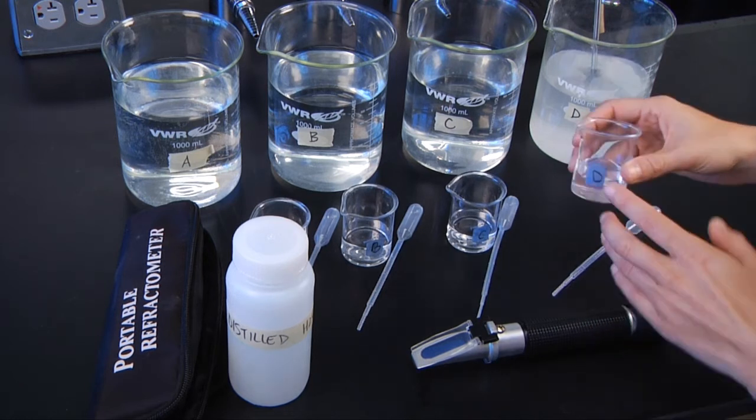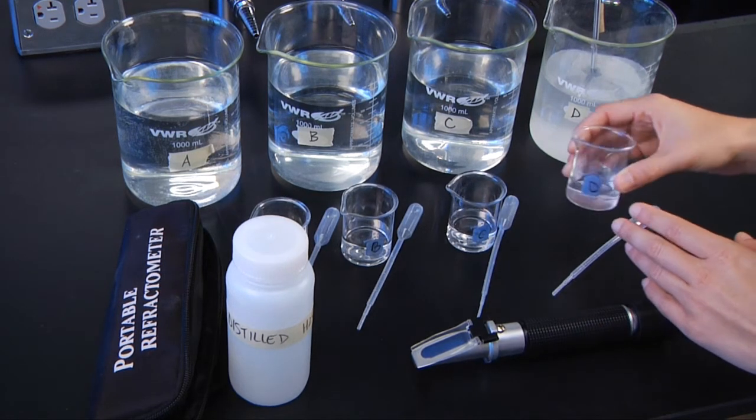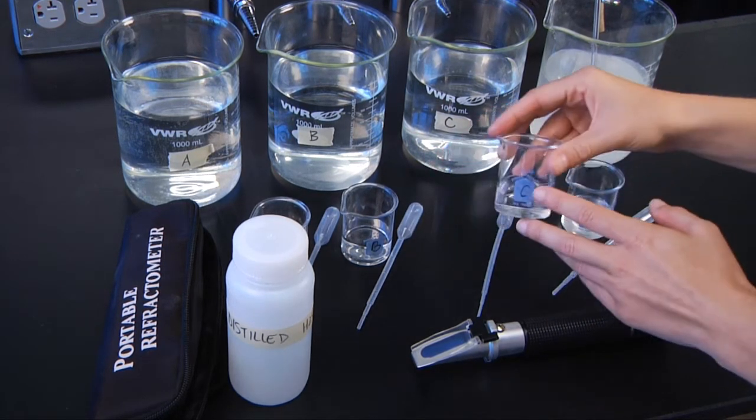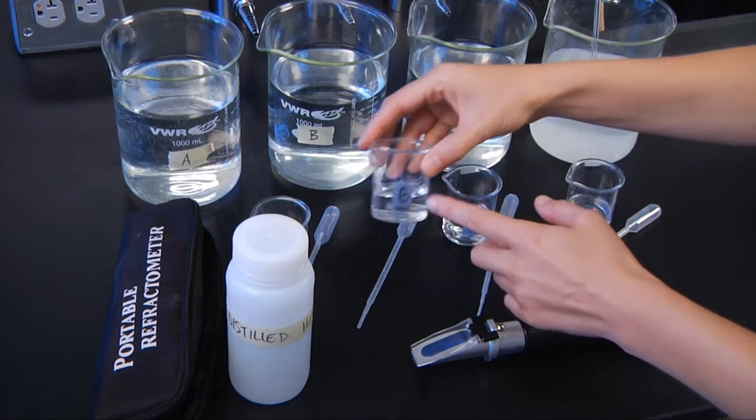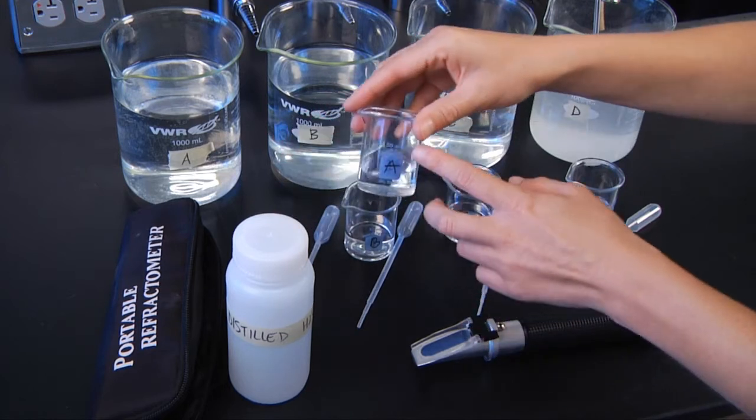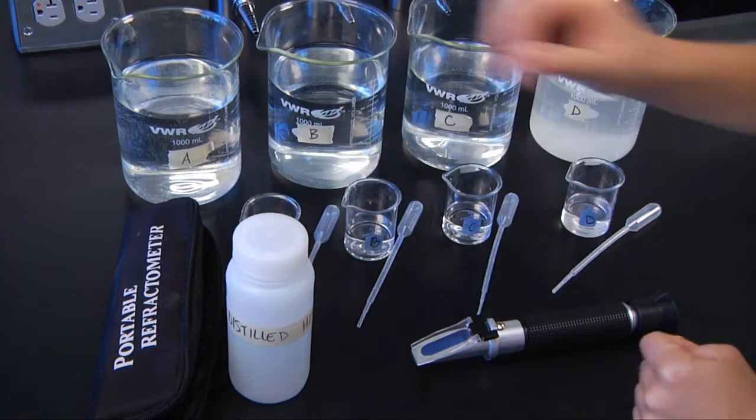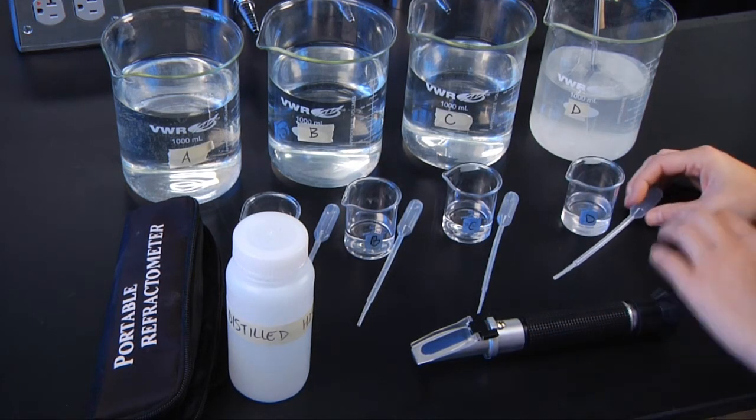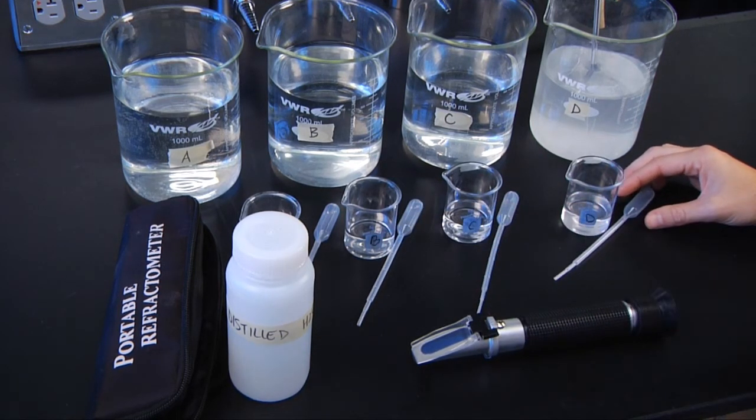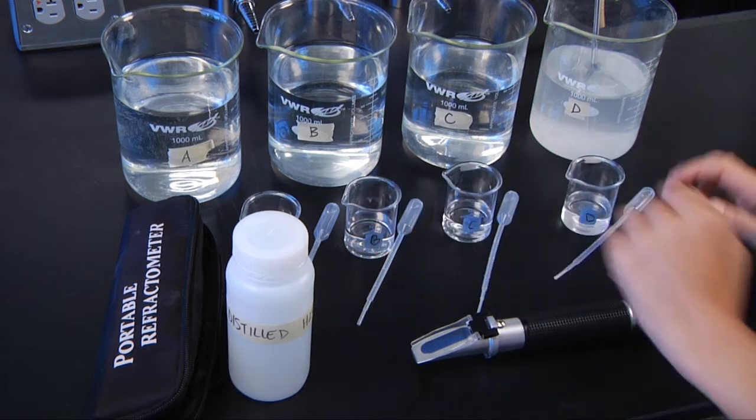And then make sure that each of your beakers that you're going to collect your sample in has the appropriate letter on it. And then you're filling it with the appropriate sample. You don't want anything to be mixed up because that would be bad for your numbers. And then make sure you have four of these little plastic eyedroppers, because you don't want to contaminate through each of your samples.